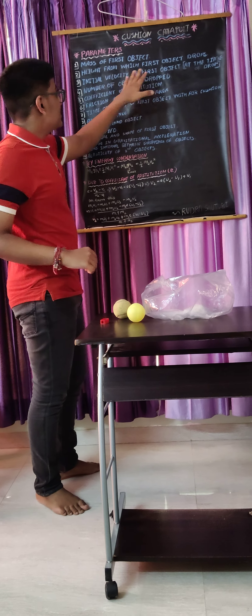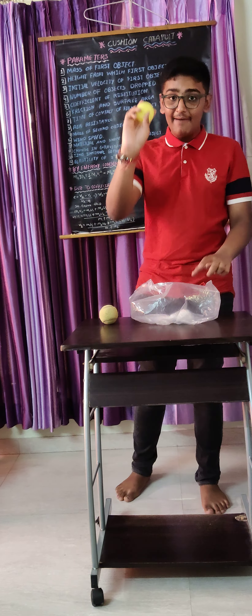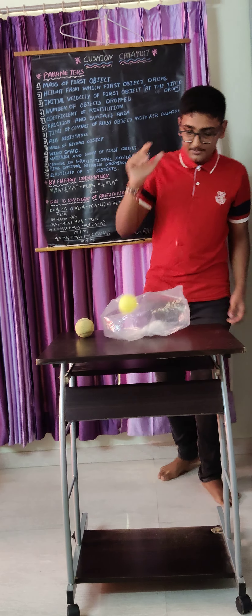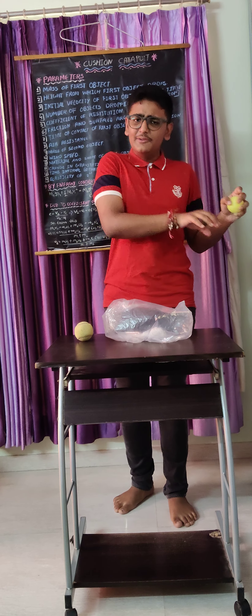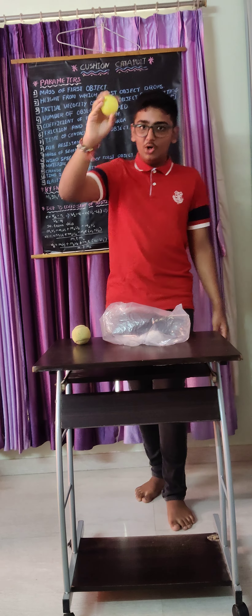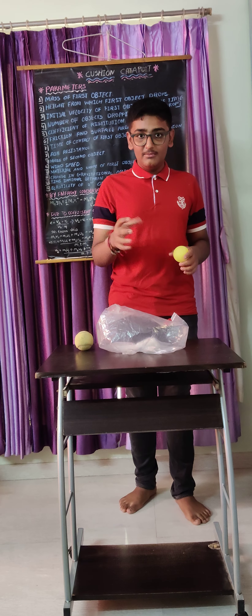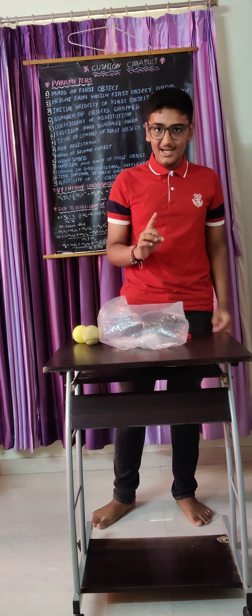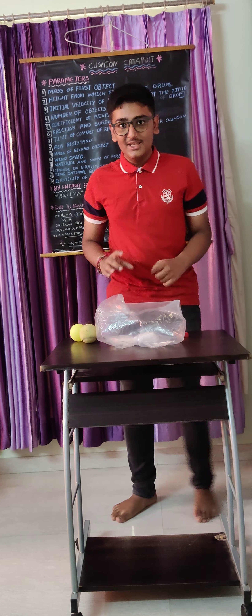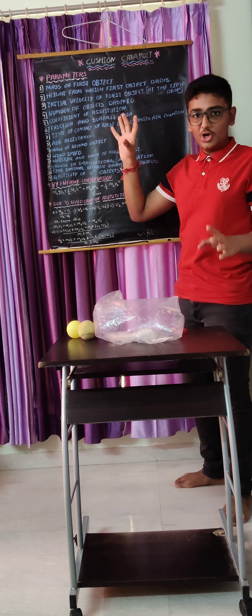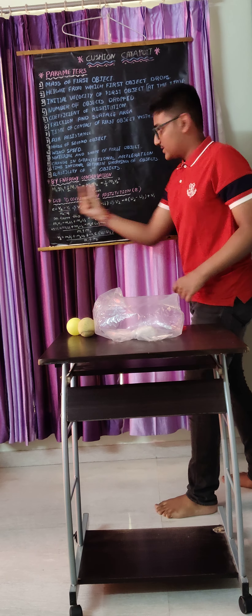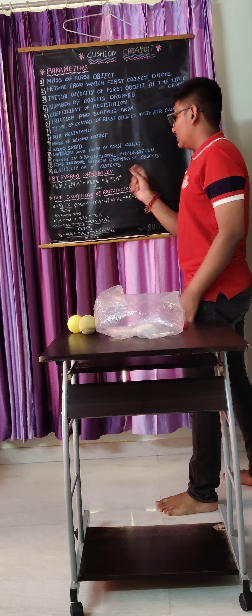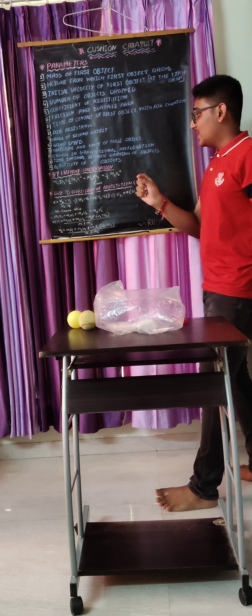The second case is the height from which the first object is dropped. I will drop the ball from a lesser height first — you can see the exit velocity was also less. Now I will drop it from a greater height. You can see that the sharpener in the first case did not gain much height, but in the second case it gained much more height as the drop height was increased. So V2 is directly proportional to the square root of H1.